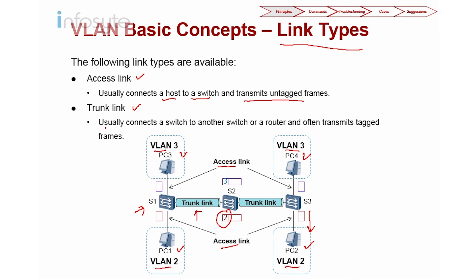Trunk link usually connects a switch to another switch or to a router. If you want to connect a switch to a router with tags sent together, this can also be a trunk. So we have two types of link: access link and trunk link.